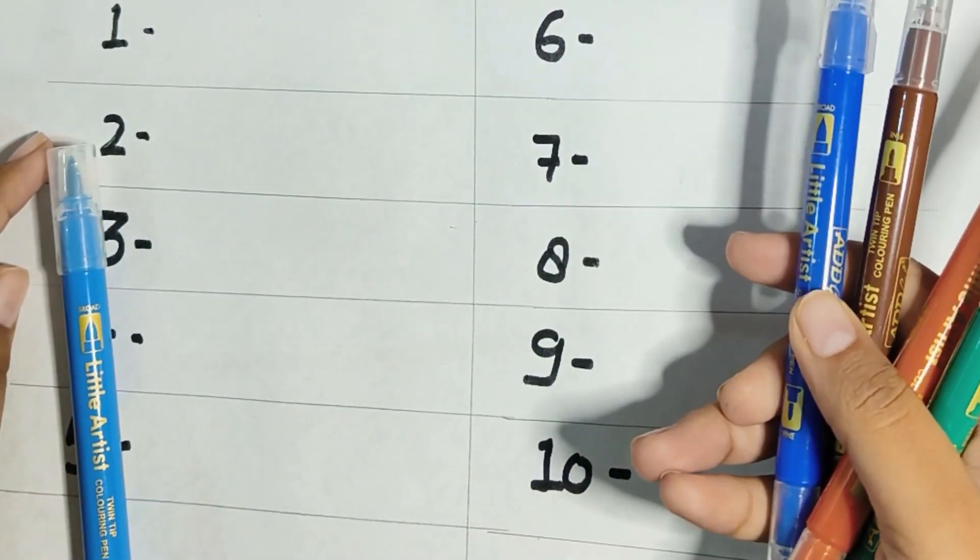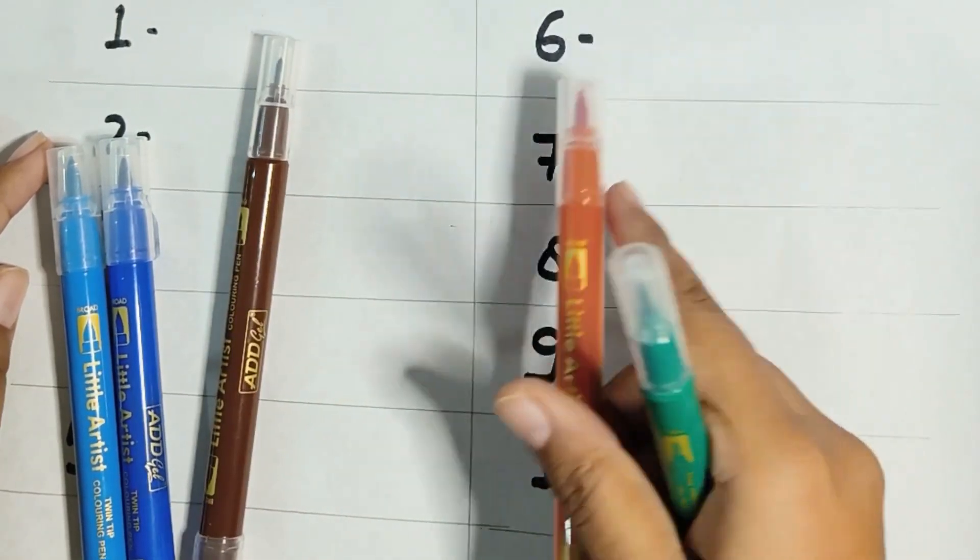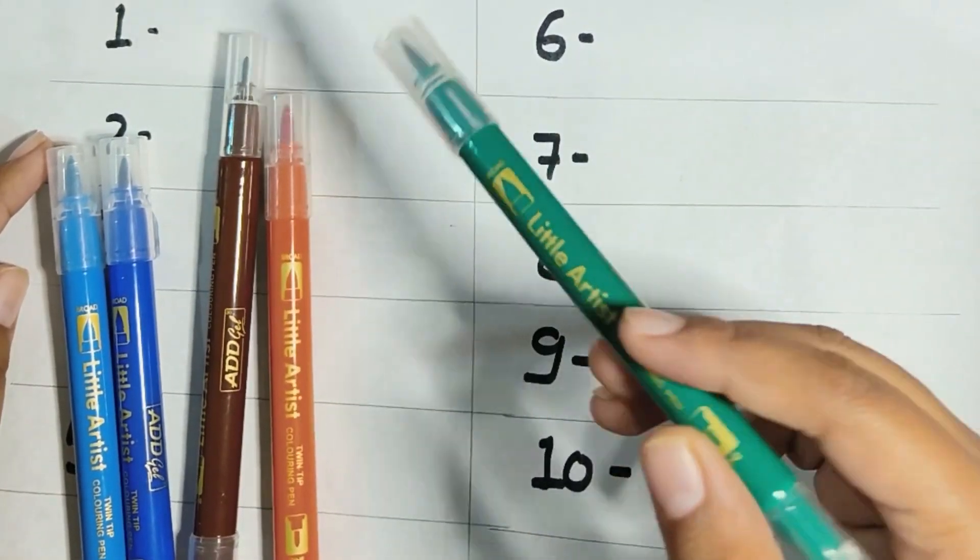This is sky blue color, dark blue color, brown color, orange color, and dark green color.